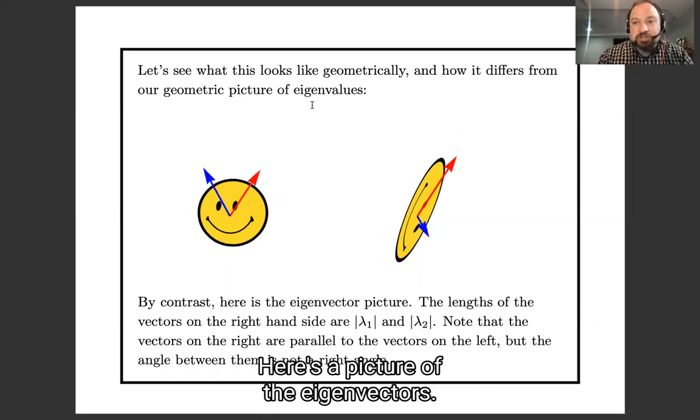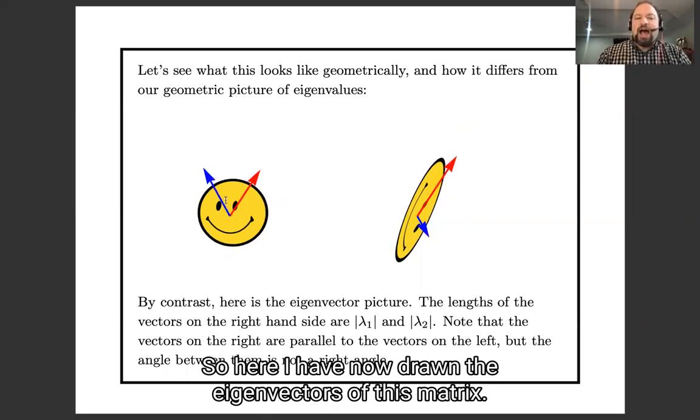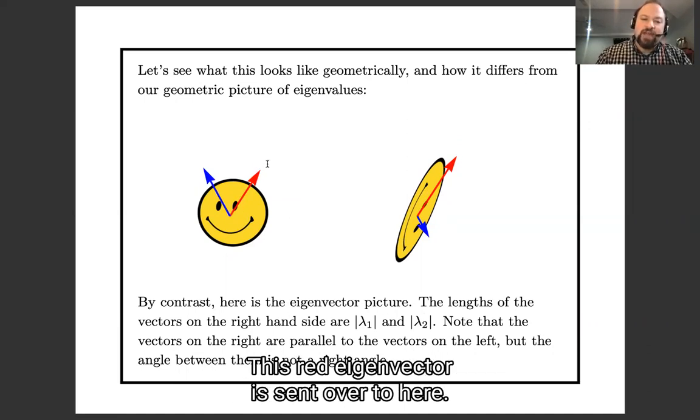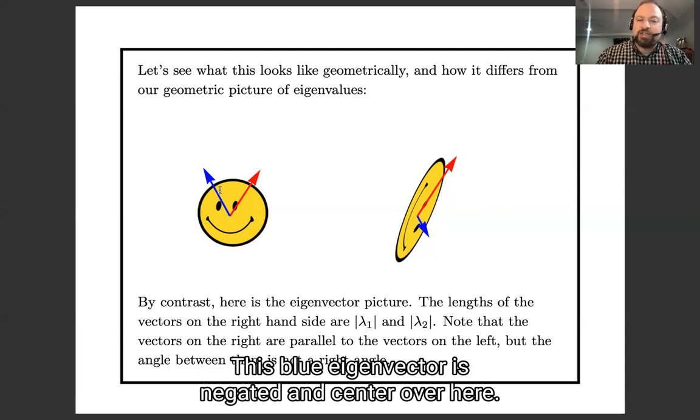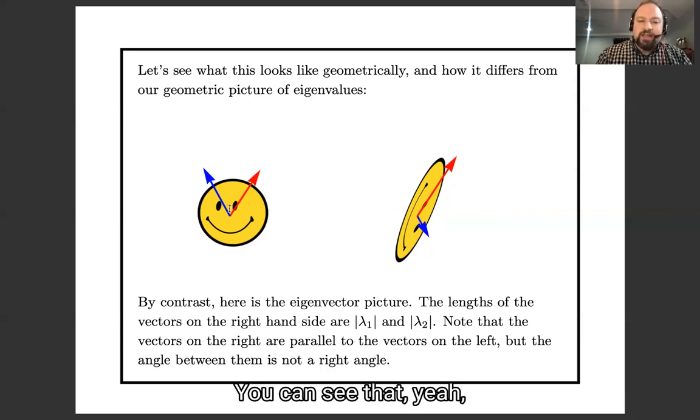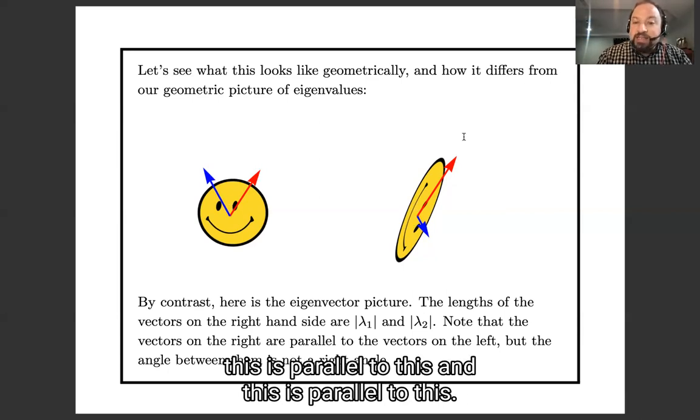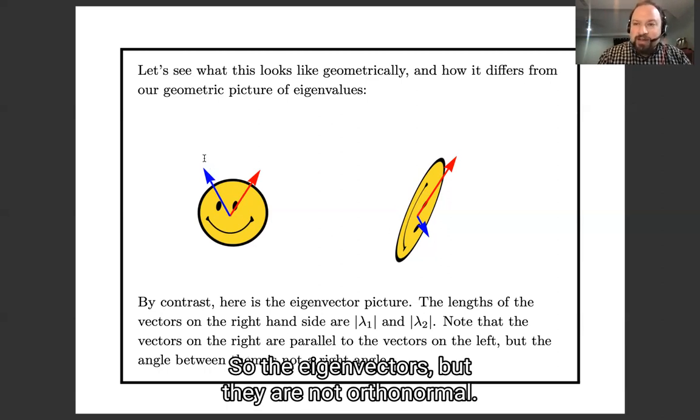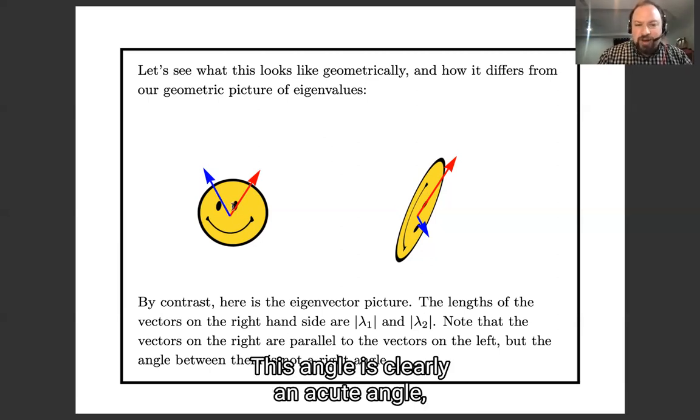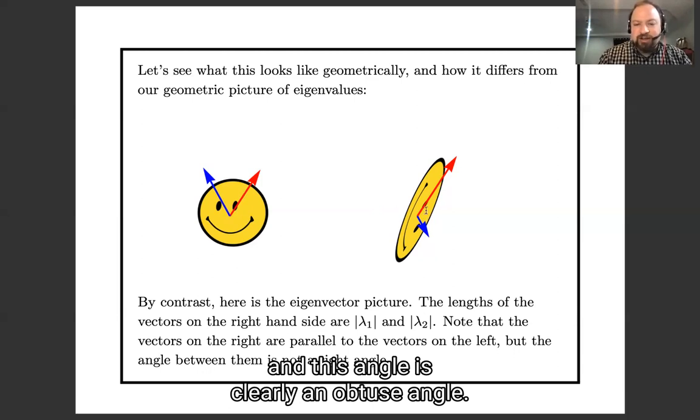You can see that they're not eigenvectors because v1, this red vector, is not pointing in the same direction as u1, this red vector. And v2, this blue vector, is not pointing the same length as v2. If we had eigenvectors, then they would be pointing in the same directions. And to emphasize that contrast, here's a picture of the eigenvectors.